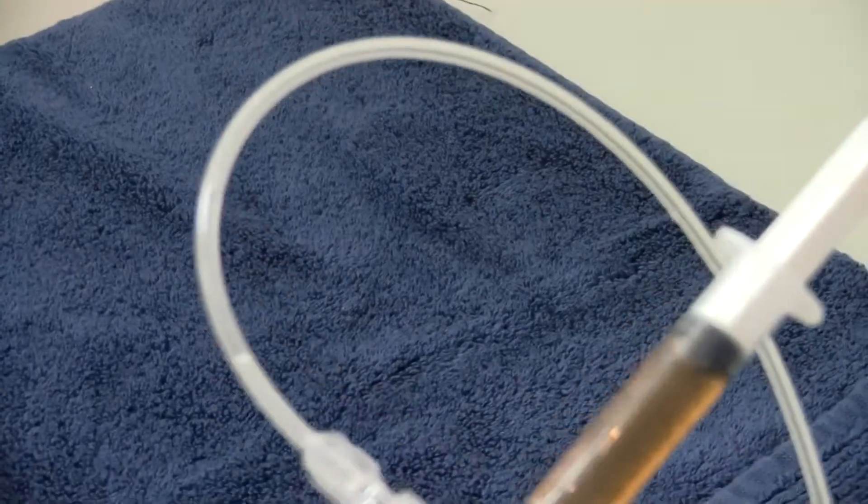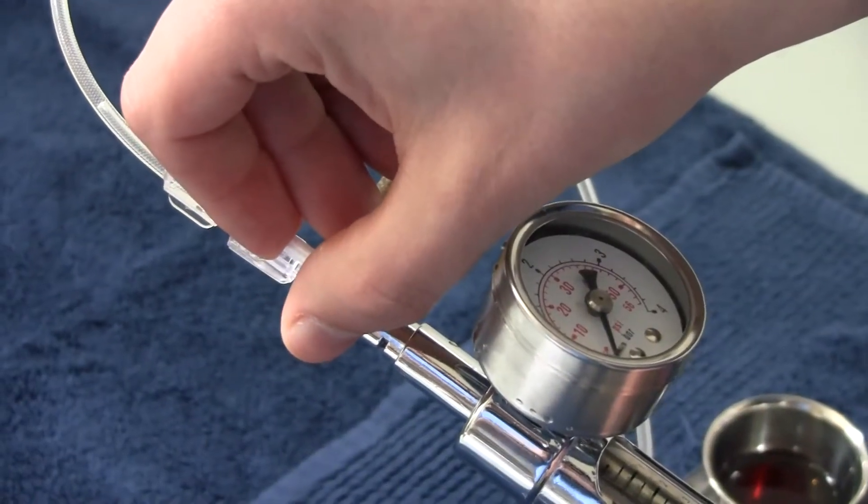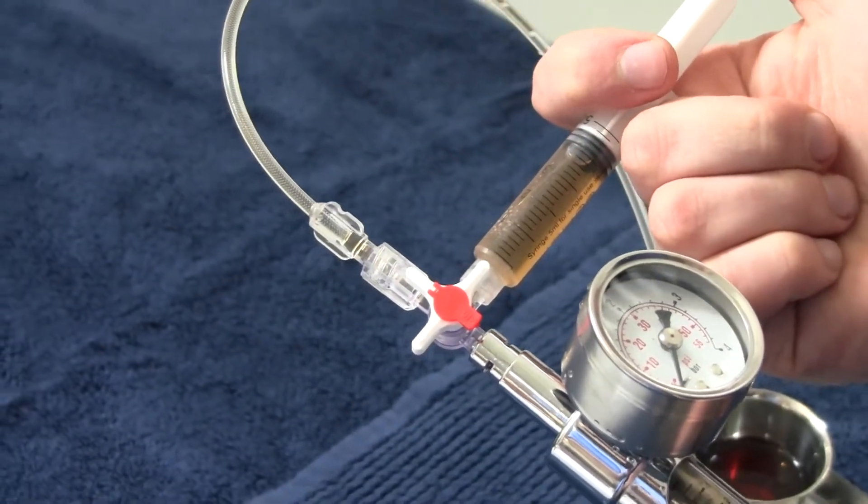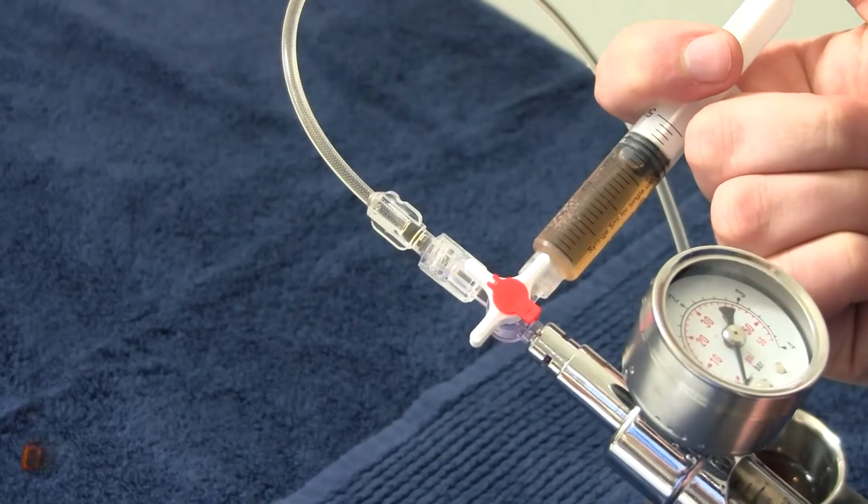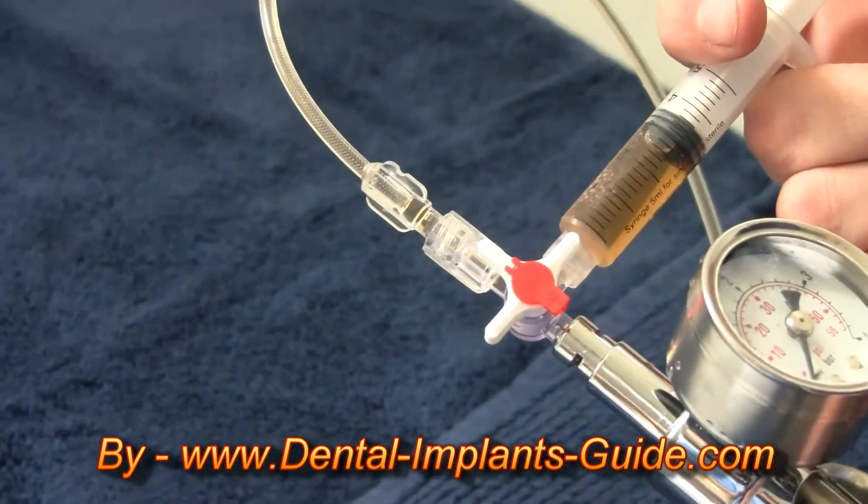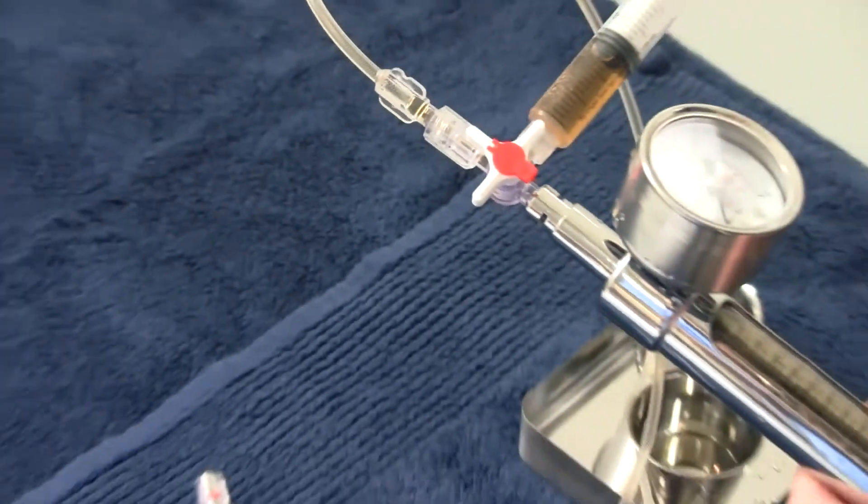Now change the direction of the flow on the stopcock to fill the tubing with contrast liquid. Make sure there are no air bubbles remaining in the tubing.